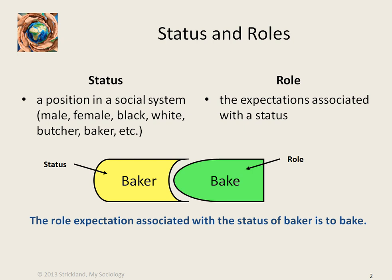In a previous mini-lecture, we discussed the topic of status, and you learned that a status is a position in a social system. Examples of status would be male or female, black, white, Asian, butcher, baker, candlestick maker, mother, father, brother, sister. All of those are examples of social positions, which we call status.